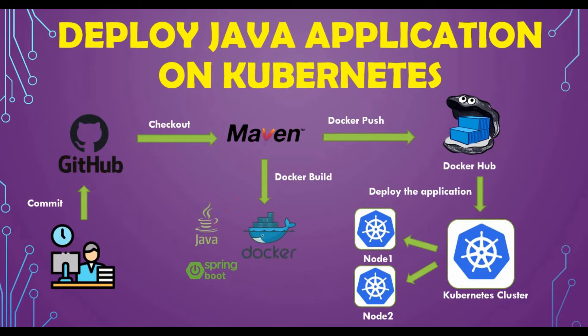That's the overall flowchart of what we're doing. We are going to do all these steps manually so you can understand the process. You might be thinking: why not do a CI/CD pipeline with Jenkins or some continuous integration process? That should be our next step, but first you need to understand what we are actually doing. The process is the same for any kind of Java application. Once you understand it, we can convert it into a Jenkins pipeline so it all happens automatically with one click.